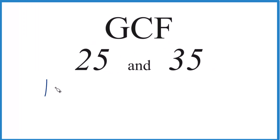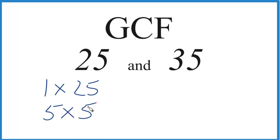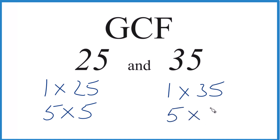For 25: one times 25 equals 25, and five times five equals 25. For 35: one times 35, and five times seven equals 35. So we have our factors for 25 and 35.